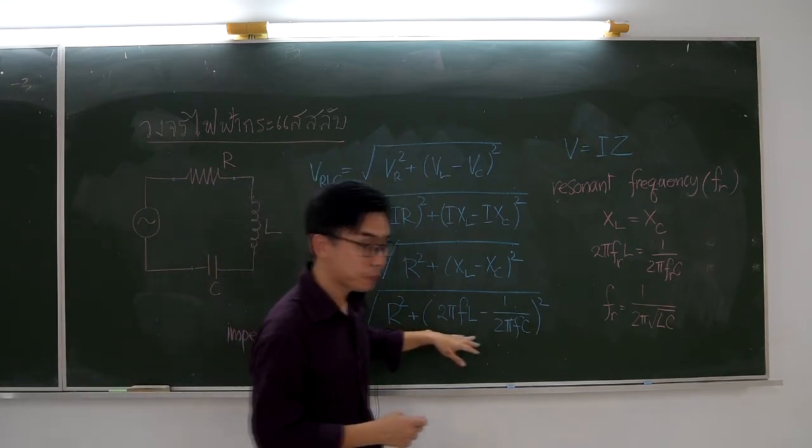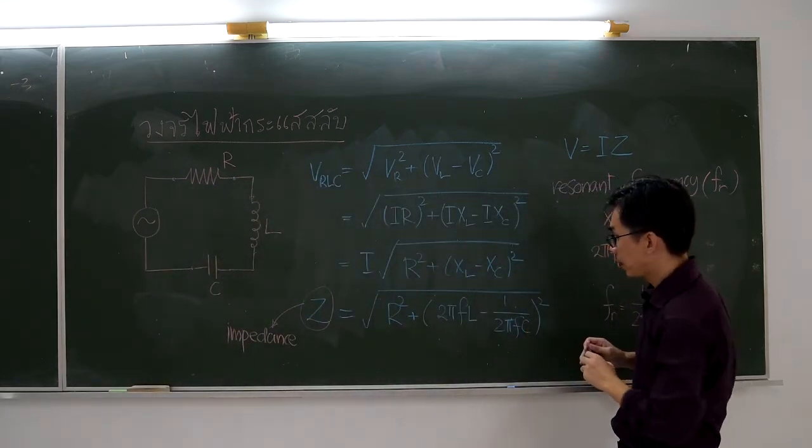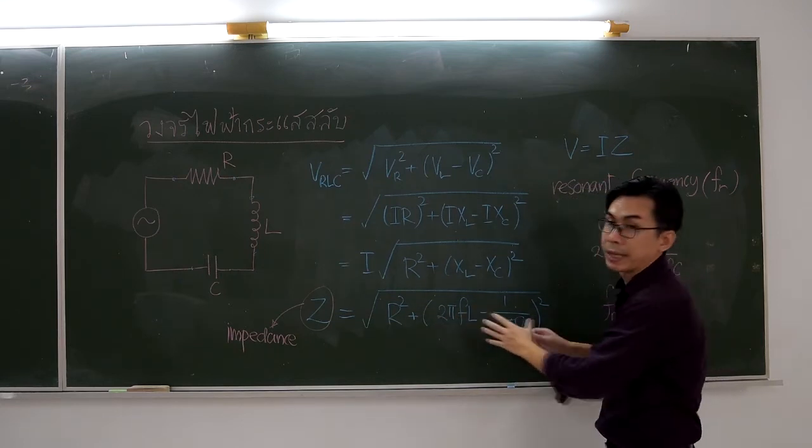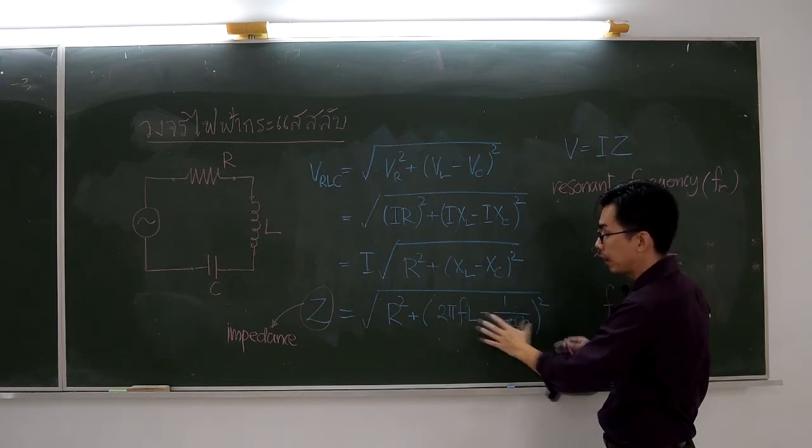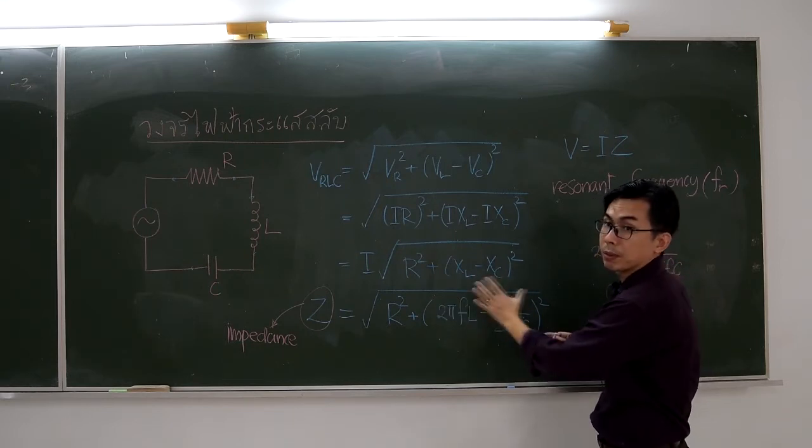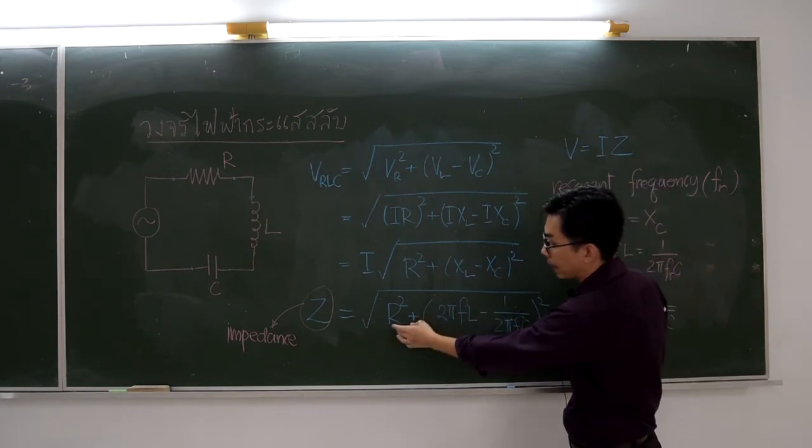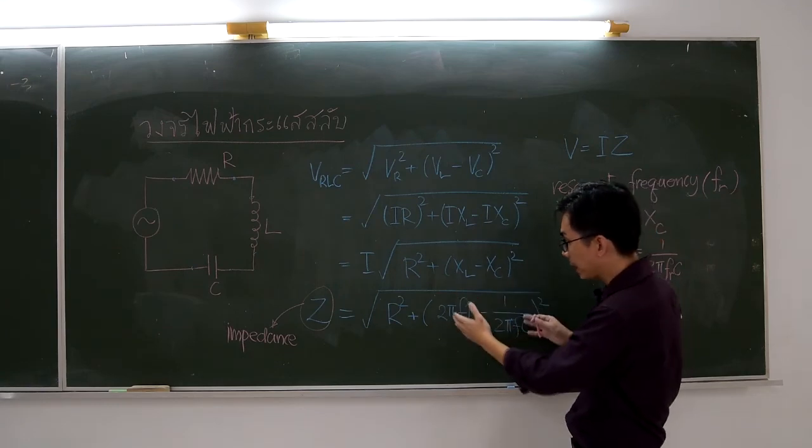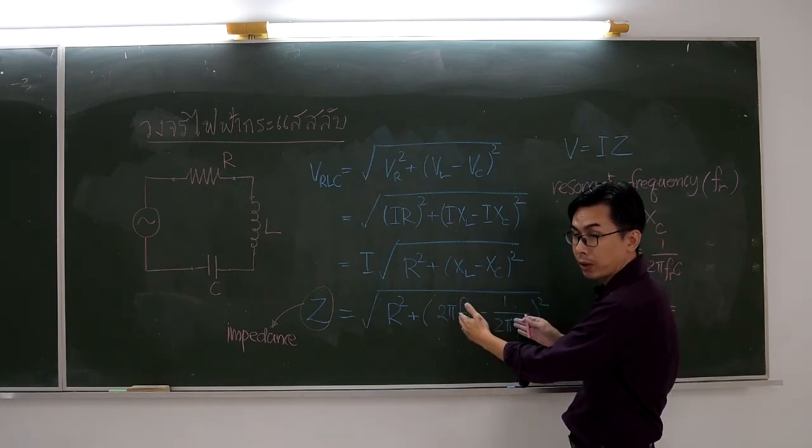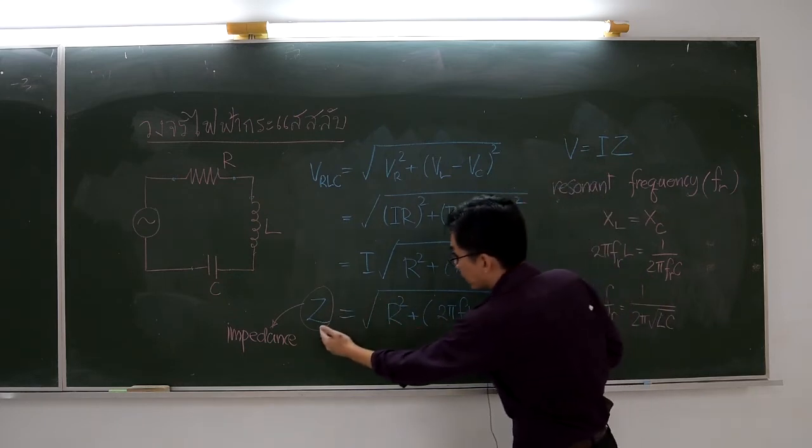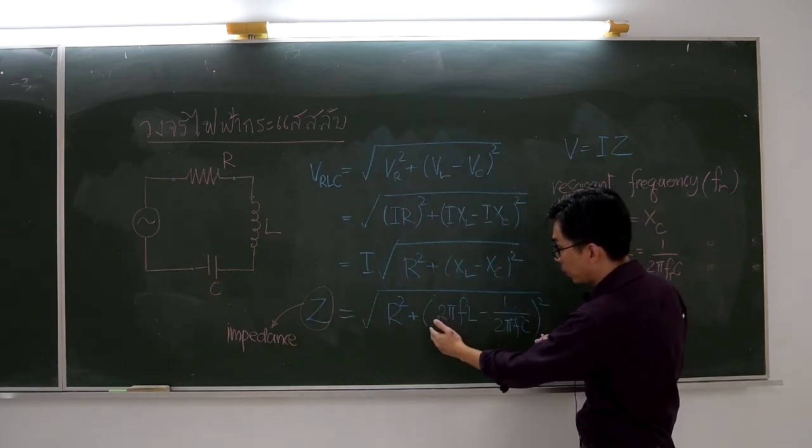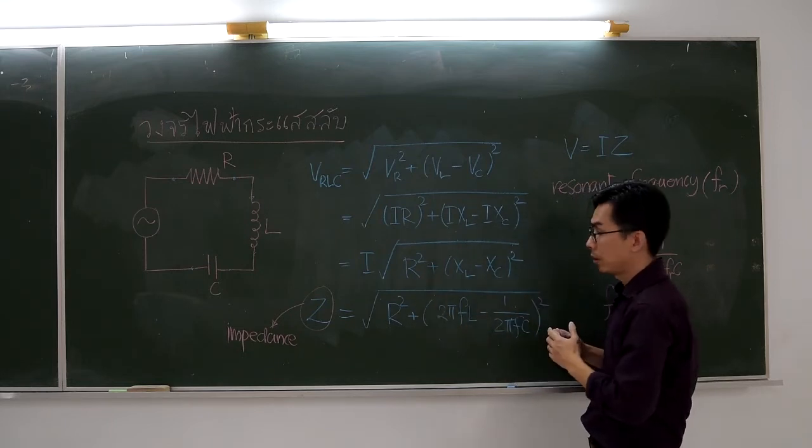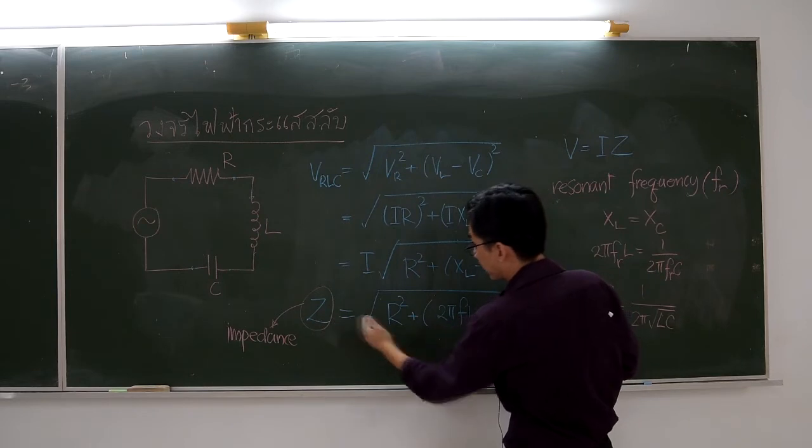If you consider the term in parentheses, for most of the frequencies, this term has a non-zero value, except when XL equals XC. When this term is not zero, adding it to R squared makes the impedance larger compared to when this term is zero. At the condition when XL equals XC, the impedance becomes minimum. This is the condition for the resonance phenomena.